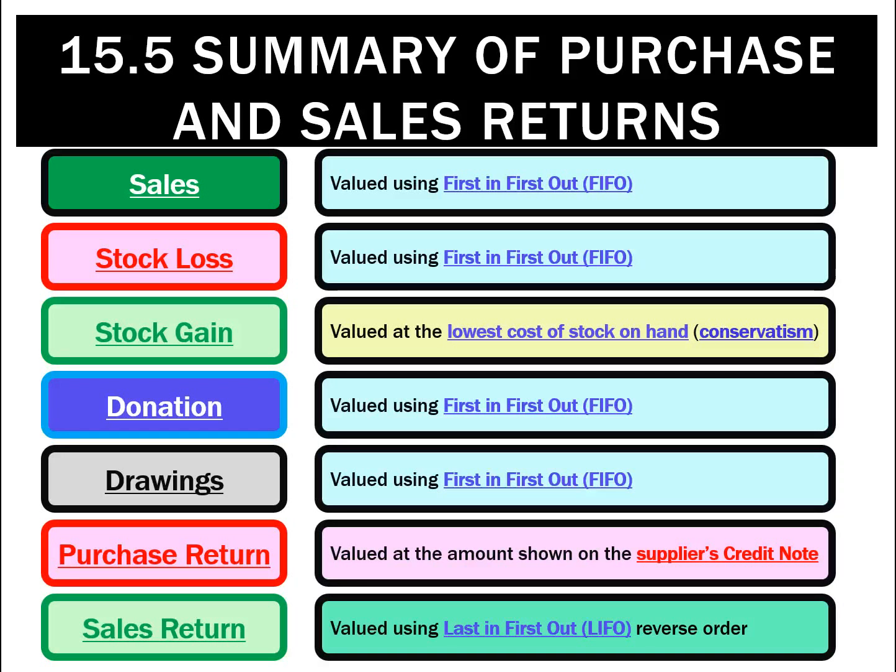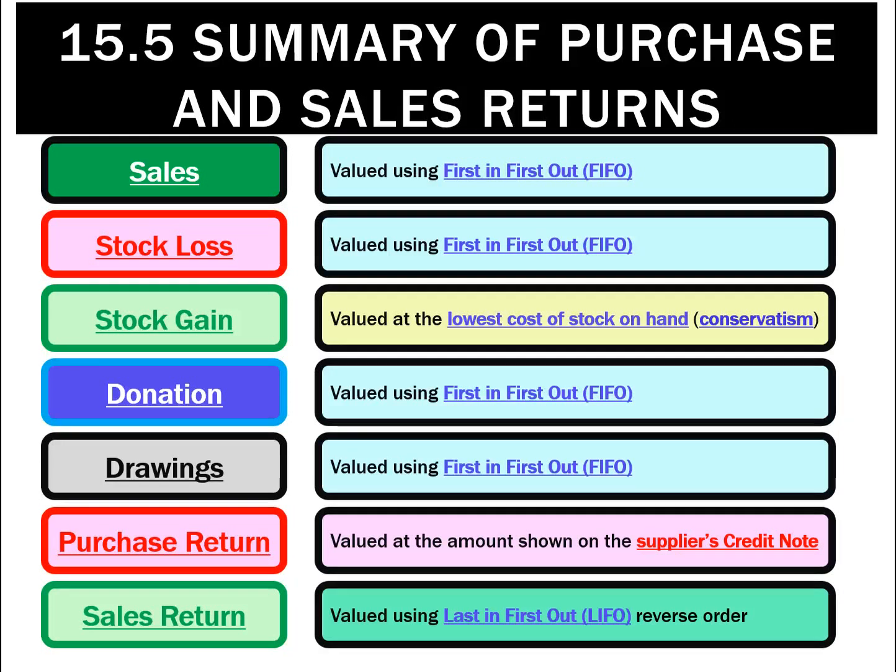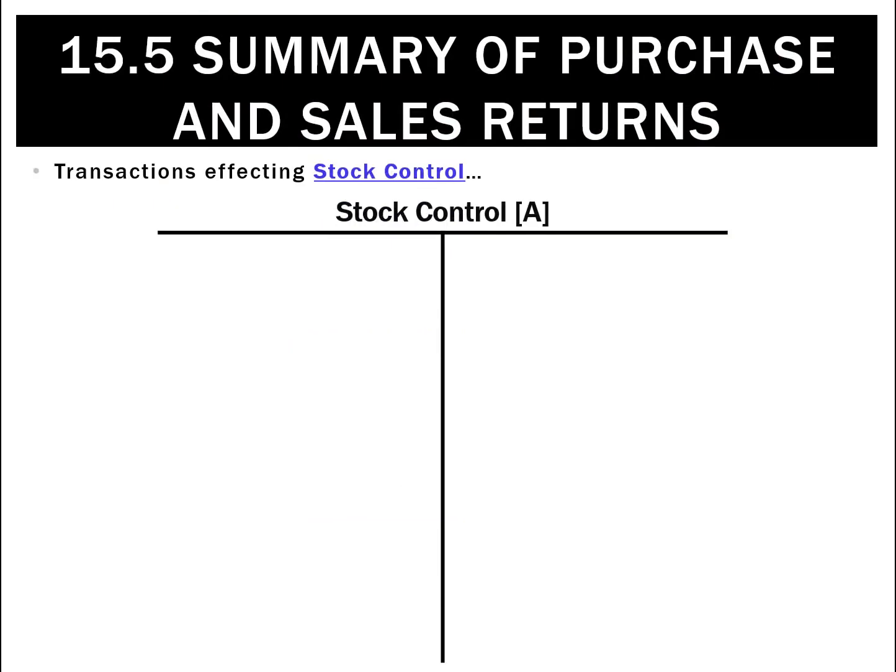The easiest way to remember it is that it's always FIFO except for the stock gain and the returns. If you can remember that, that's going to be half the battle — they're all FIFO except the stock gains and the two returns.